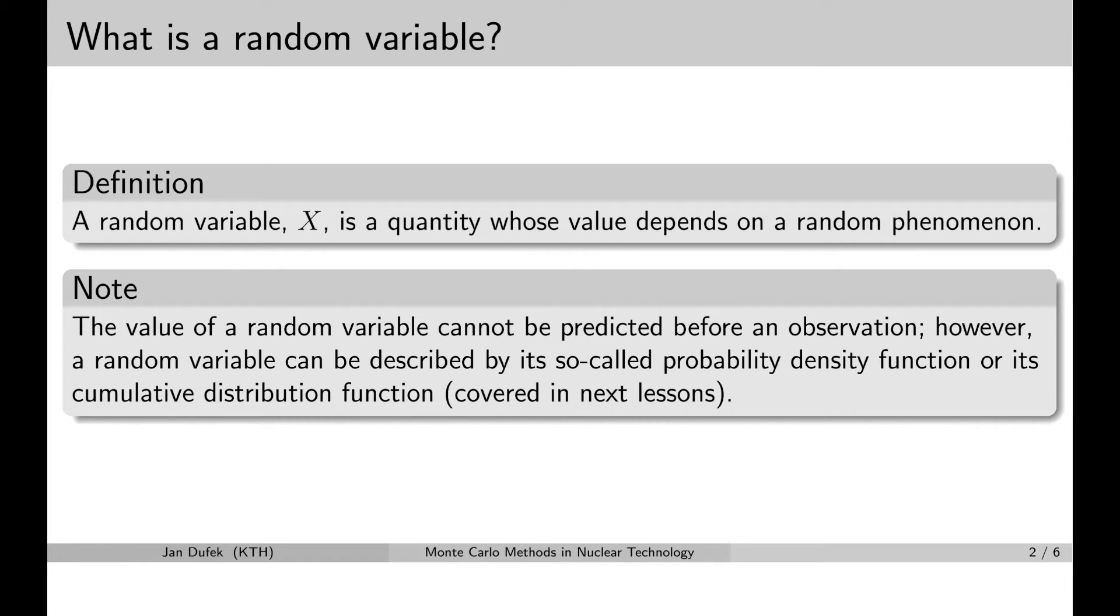Now, because random variables depend on a random process, it happens so that we cannot predict the value of the observation of the random variable. Nevertheless, we can simulate random variables if we have so-called probability density function or the so-called cumulative distribution function of the random variable.